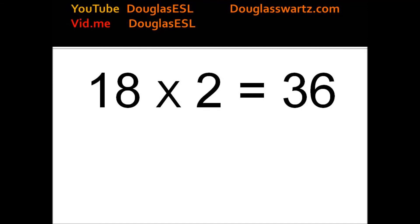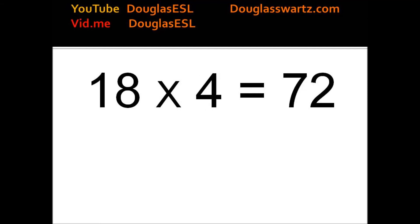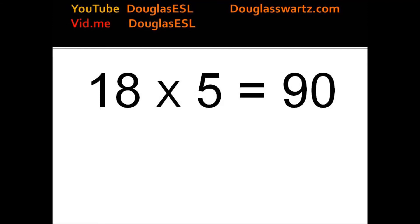18 times 2 equals 36. 18 times 3 equals 54. 18 times 4 equals 72. 18 times 5 equals 90.